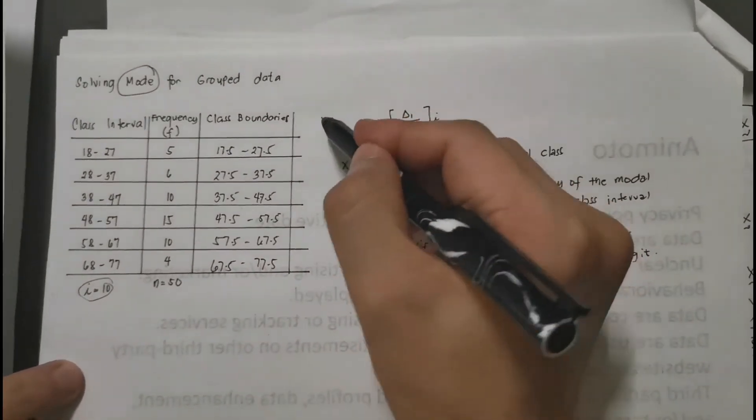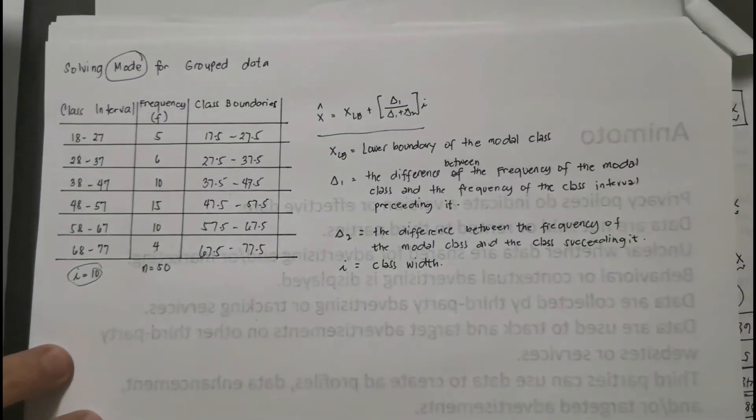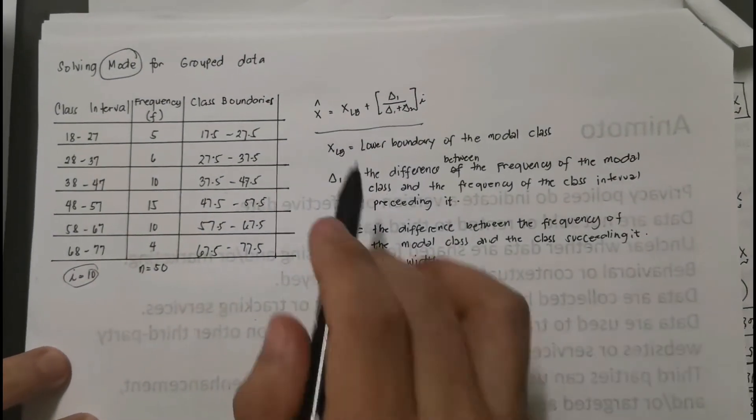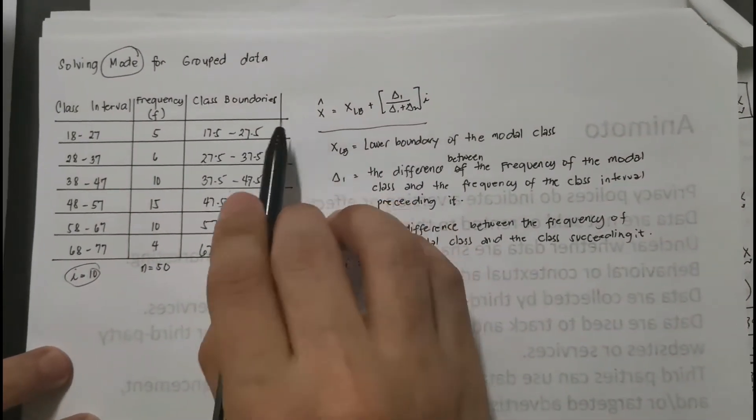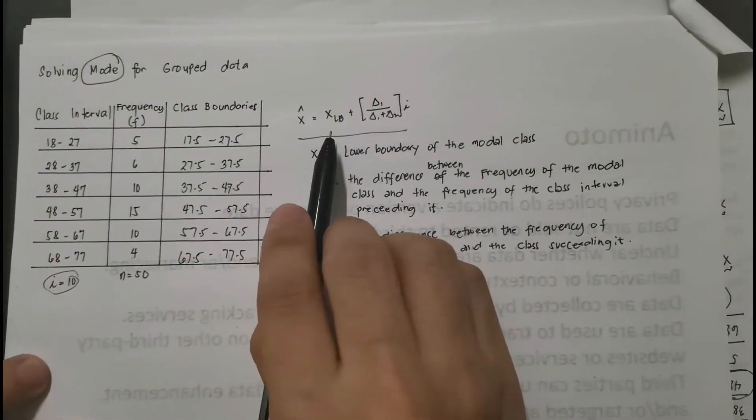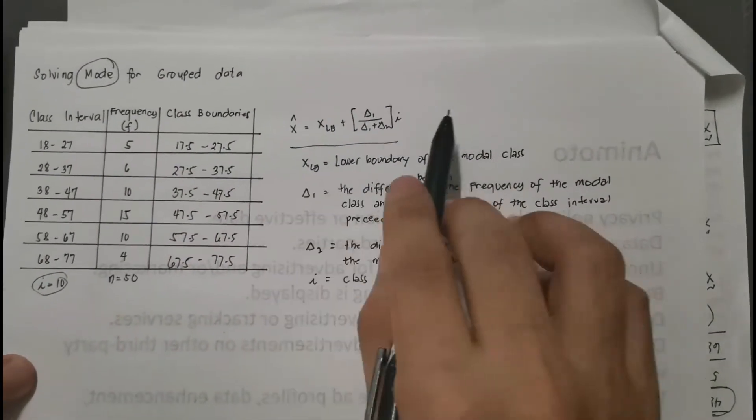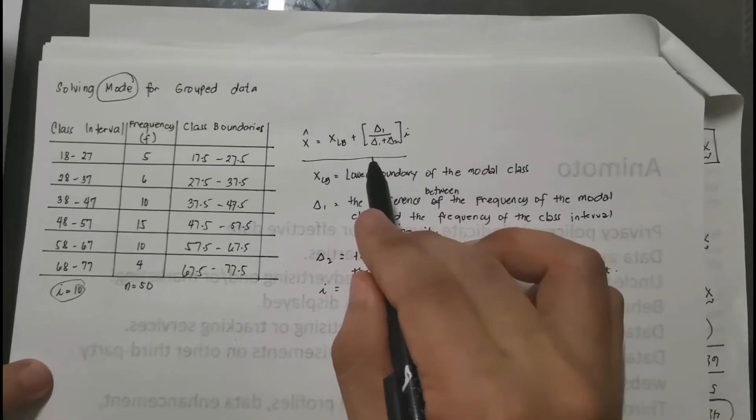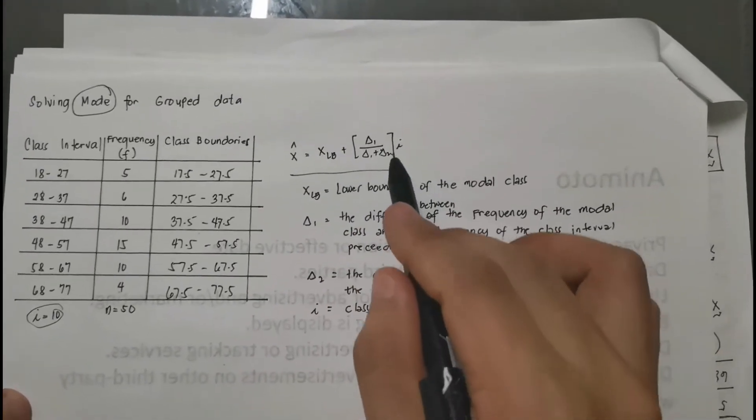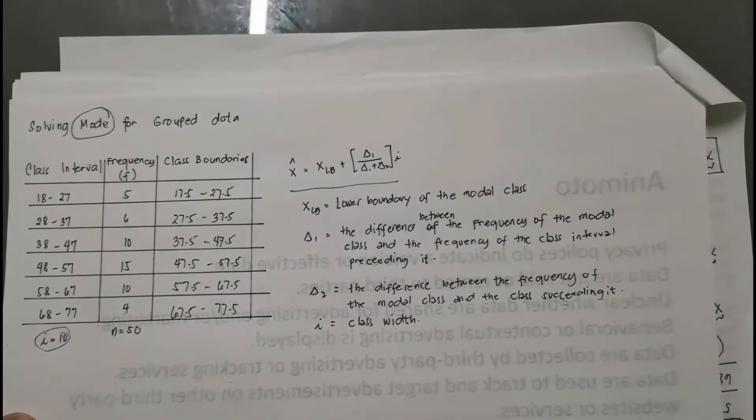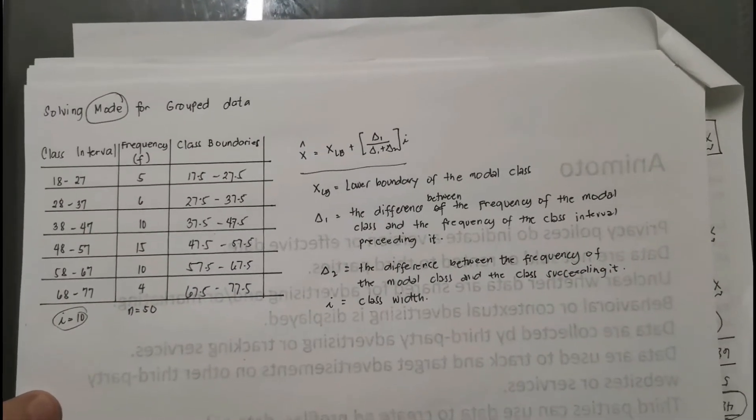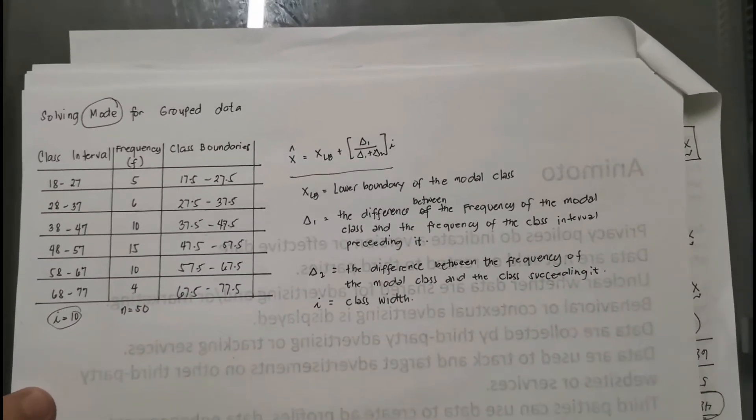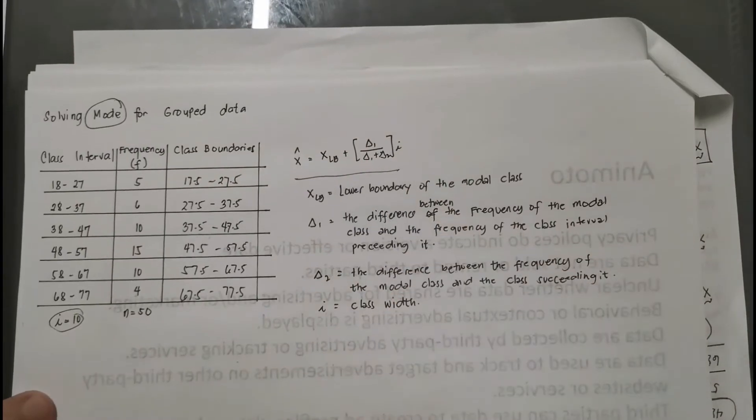Now if you can see here, I have written down the formula to solve for the mode. So we have mode, or x-hat, equals x sub lb plus delta 1, the quantity of delta 1 divided by delta 1 plus delta 2, multiplied to our i or the class width. Now quickly, let us get to know what are these symbols.